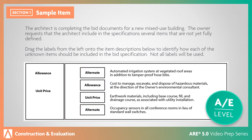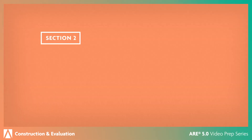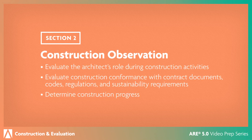This is an AE-level item requiring the classification of different scope items in order to recommend the appropriate use of contract variables. The Construction Observation section addresses visiting the job site throughout the course of construction and the architect's roles and responsibilities.